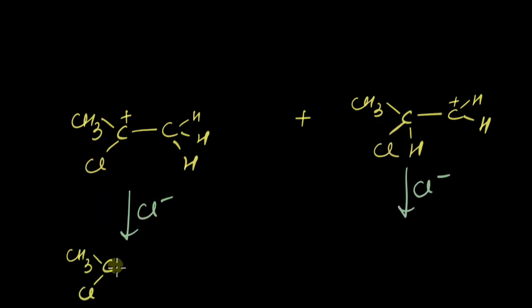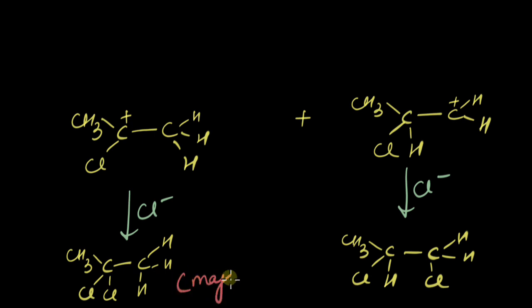The product on the left hand side would be this - Cl would directly go and attach itself, you get this. While on the right hand side the product would be this. Which one's the major one? This one, which is a gem dihalide, while the vicinal dihalide is the minor product.